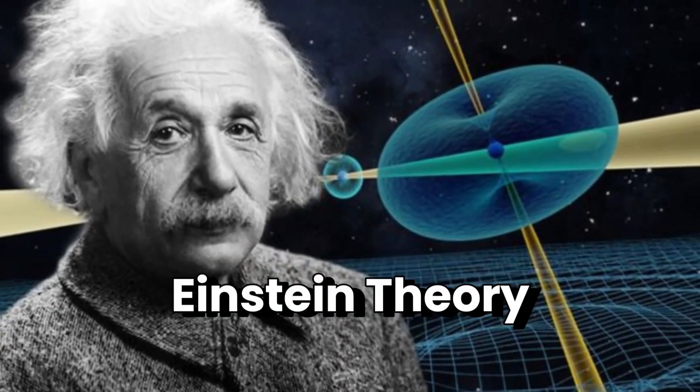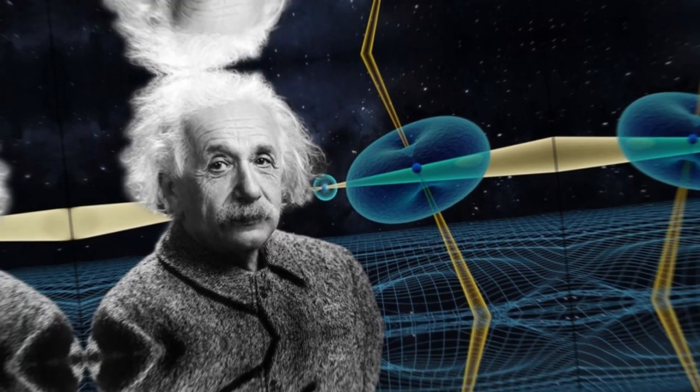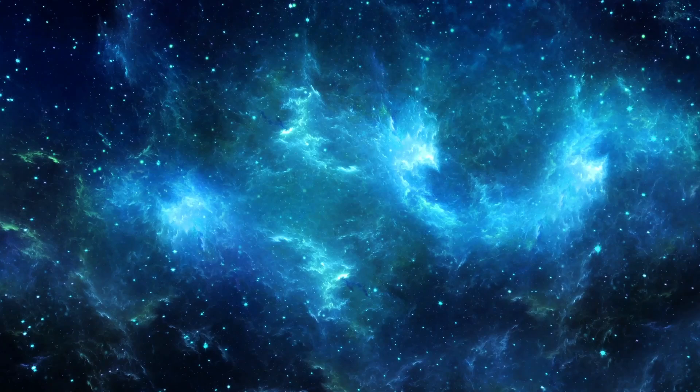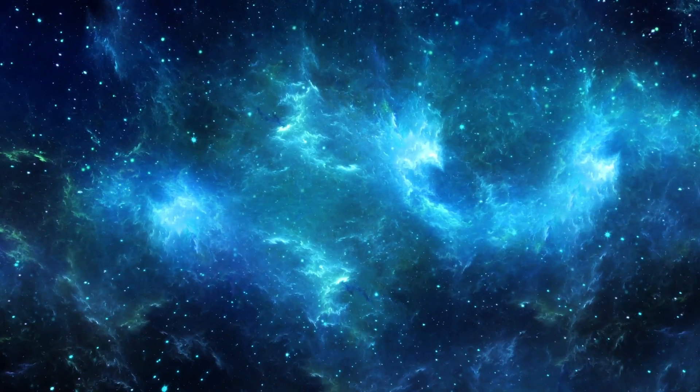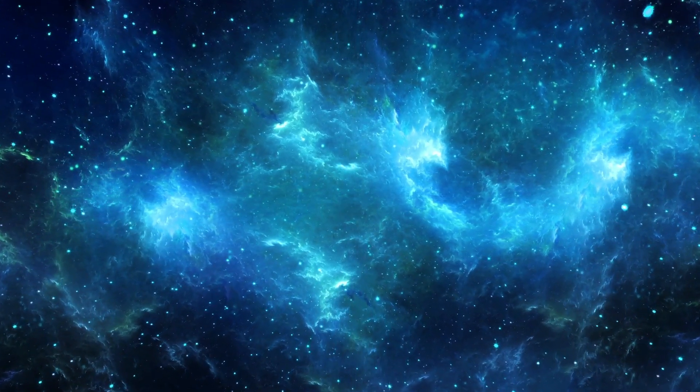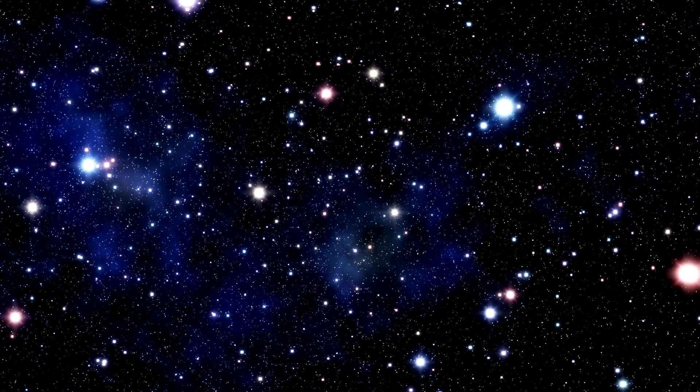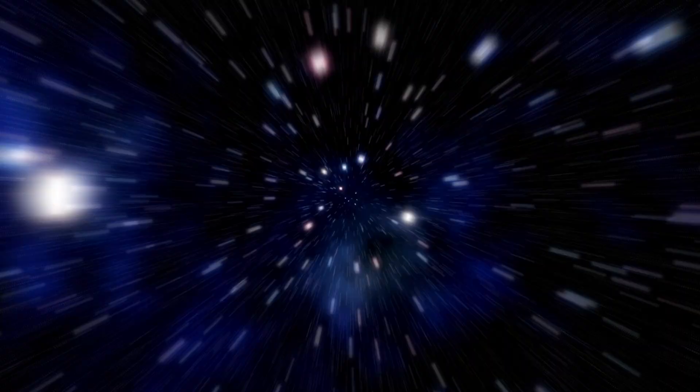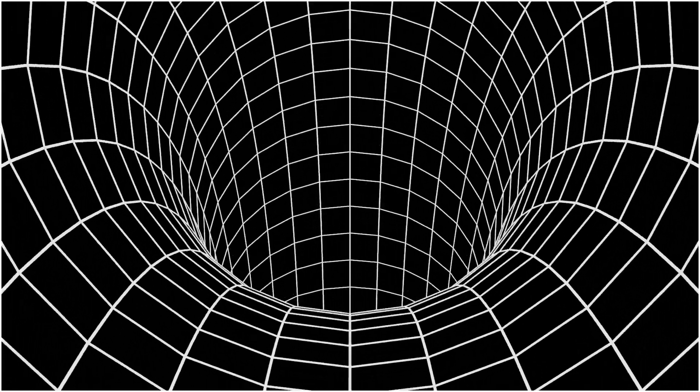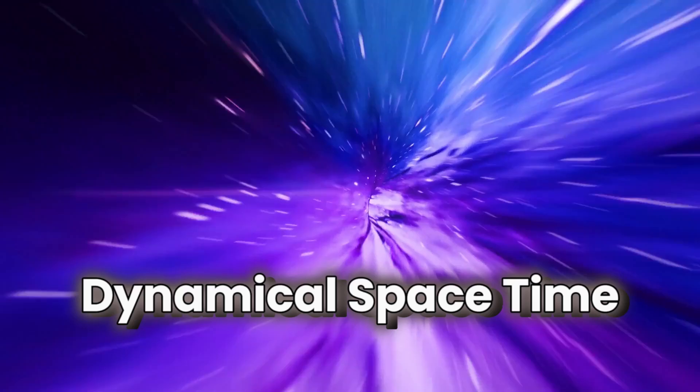Einstein's theory of general relativity gives us a lens through which we can understand this strange behavior. In general relativity, space isn't just some background in which other things can move around. Instead, space itself can stretch and warp and evolve over time. Einstein showed that in this framework, gravity is no longer a force, but rather a distortion of an object's inertial path in a dynamical space-time.